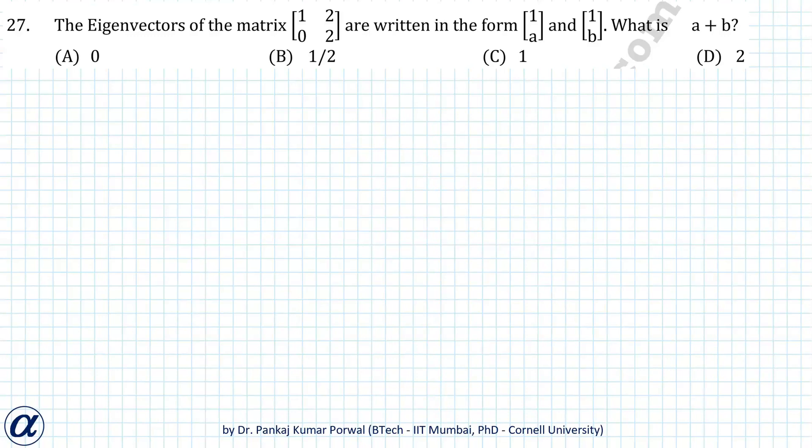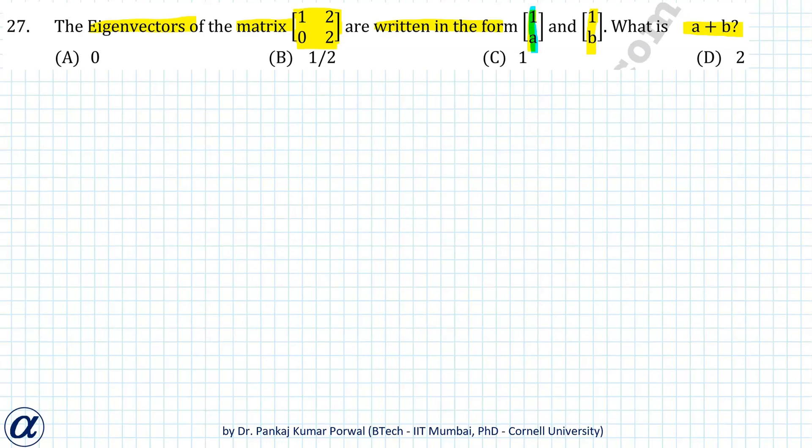In this question, we are given a matrix and the eigenvectors of this matrix are written in the form [1, a] and [1, b]. We are asked what is the value of a plus b. Note that both eigenvectors are of the same form.